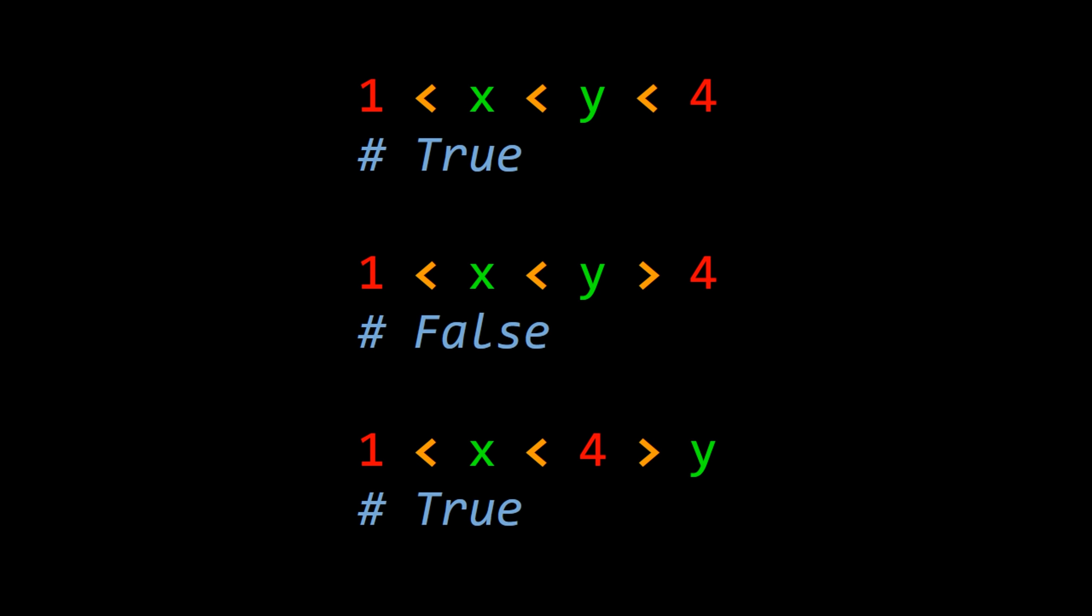Now if we change the original statement to include a greater than operator as the last comparison, then the entire statement returns false, because y, which is equal to 3, is not greater than 4. And then finally again, we can flip the 4 and the y to make the statement return true, because all the individual comparisons are true.